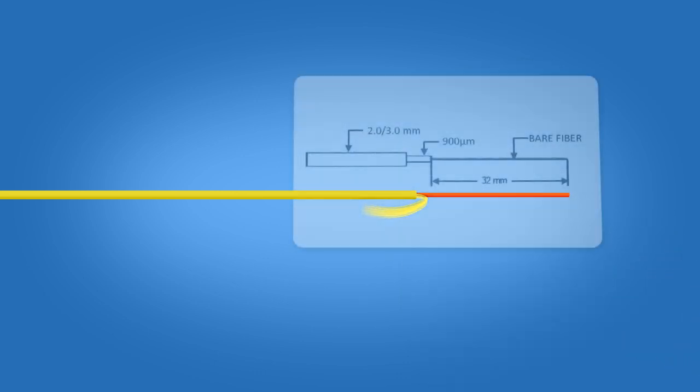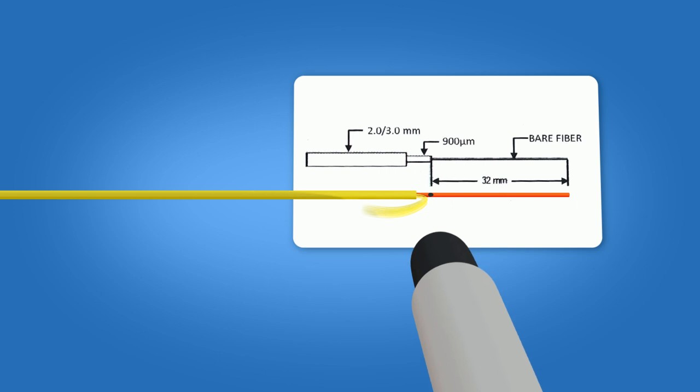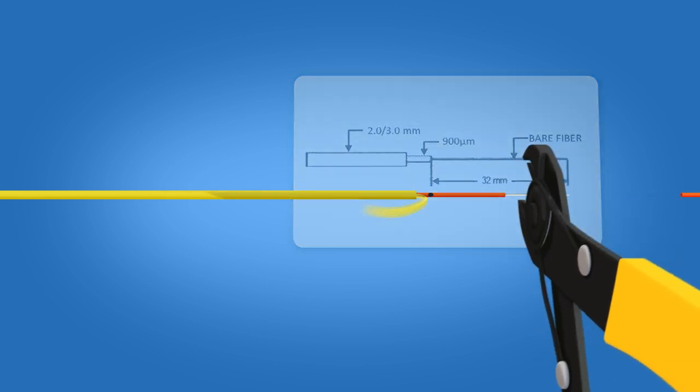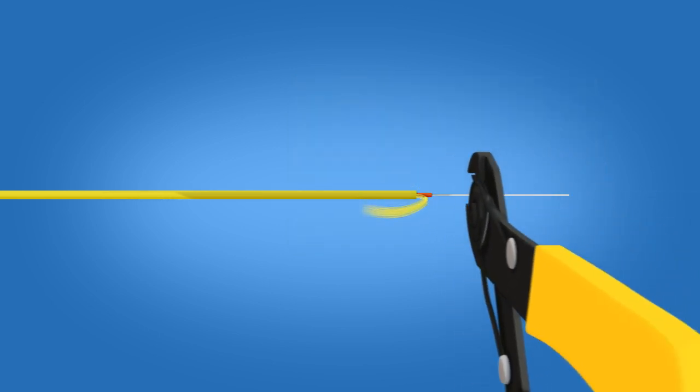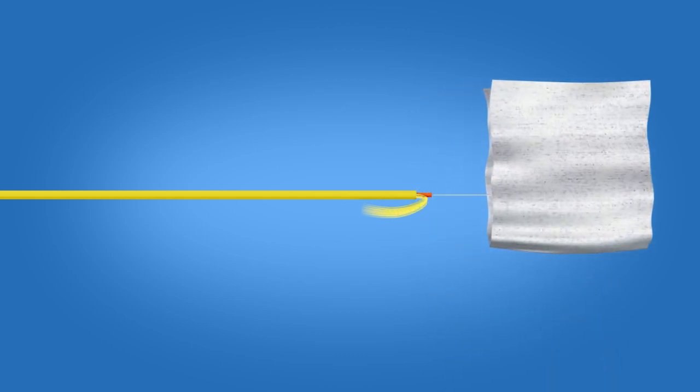Using the template on the front of the connector packaging, mark the fiber at 32 millimeters from the end of the 900 micron fiber. Strip 32 millimeters of 900 micron and 250 micron coating off, exposing the bare fiber. Clean the fiber with a lint-free wipe and fiber preparation fluid.